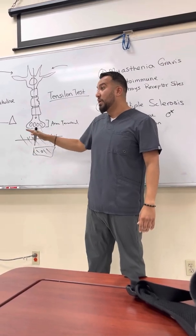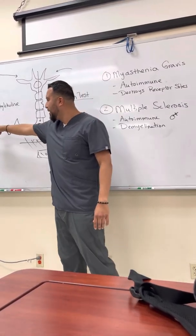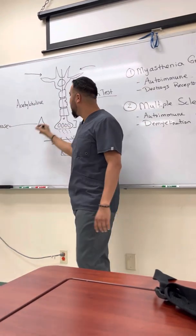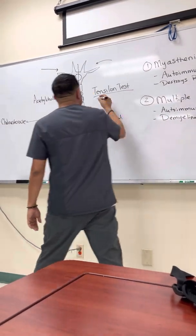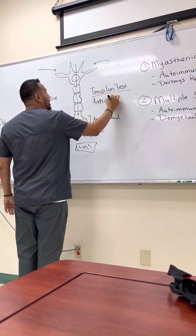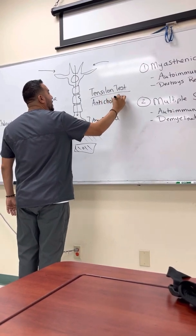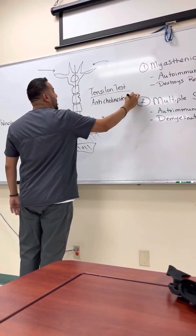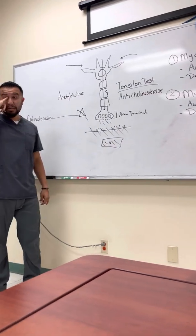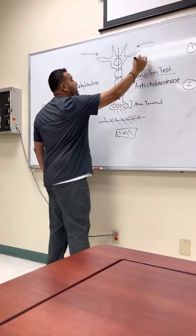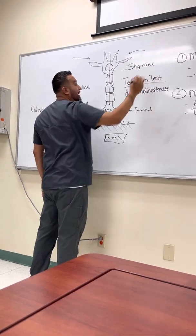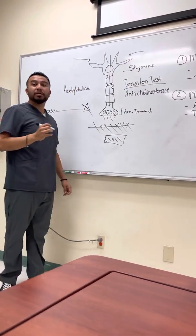You want to leave it there. So what do you want to do with cholinesterase? Since it recycles the acetylcholine, you want to block it. So what we give is something called anticholinesterase. If the drug name ends in 'stigmine,' it's an anticholinesterase.